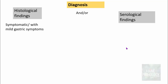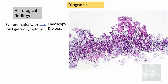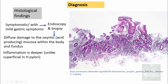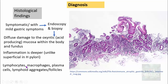For histological findings, when patients undergo endoscopy and biopsy, the classical findings include diffuse damage to the oxyntic mucosa in the body and fundus, where the inflammation is extensive and deep-seated — unlike H. pylori gastritis where inflammation is superficial. Predominant inflammatory cells include lymphocytes, macrophages, and plasma cells, with extensive lymphoid aggregates and even lymphoid follicles with prominent germinal centers. You also see evidence of intestinal metaplasia and endocrine cell hyperplasia.